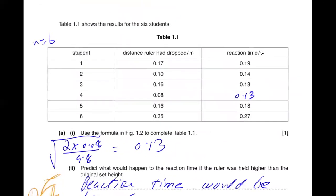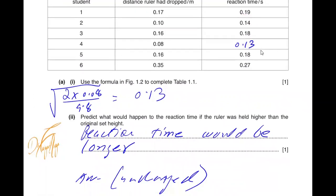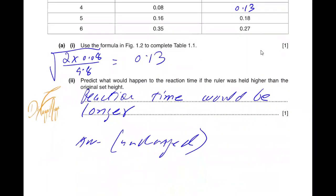Table 1.1 shows the results of 60 students. There are 60 students in total. The distance the ruler dropped - they ask you to calculate one value of the reaction time. Just use the formula and the value of 0.08 to get the answer. Your answer should be in two decimal places because all the values provided to you are in two decimal places. Predict what would happen to the reaction time if the ruler was held higher than the original set height.